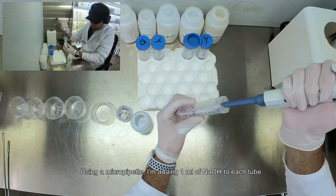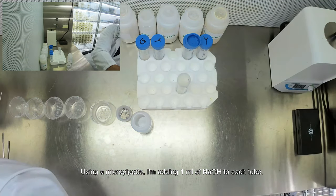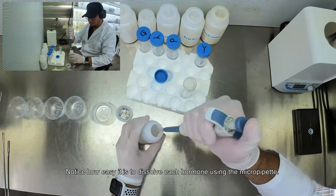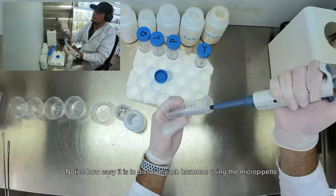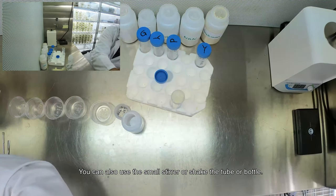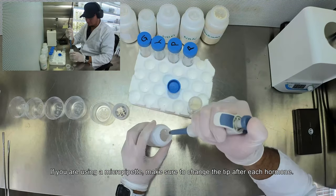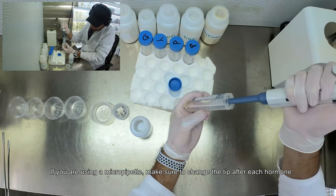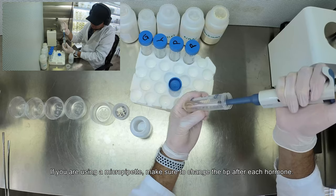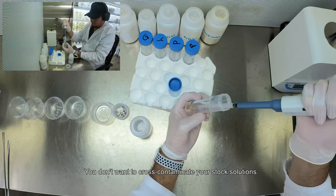Using a micropipette and adding 1 ml of sodium hydroxide to each tube. Notice how easy it is to dissolve each hormone using the micropipette. You can also use a small stirrer or shake the tube or bottle. If you are using a micropipette, make sure to change the tip after each hormone. You don't want to cross-contaminate your stock solutions.